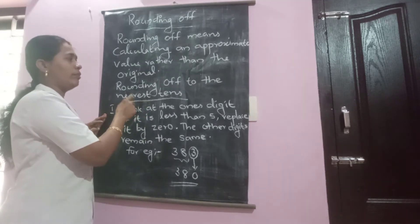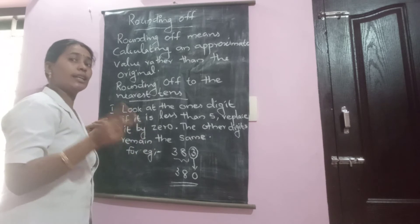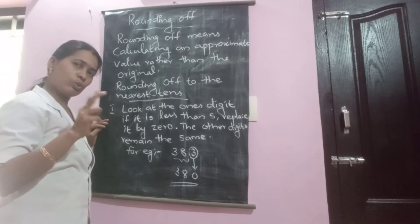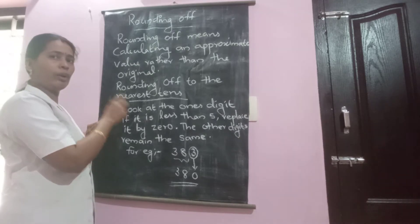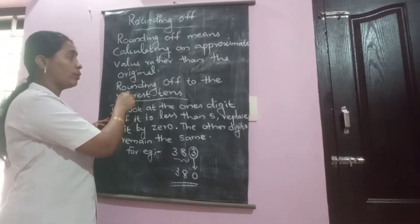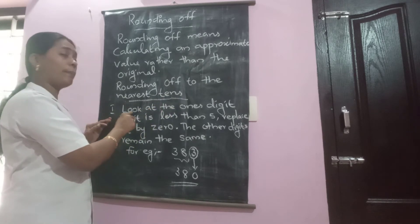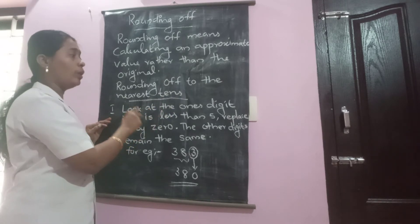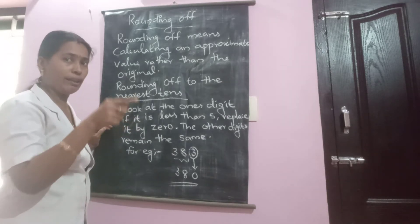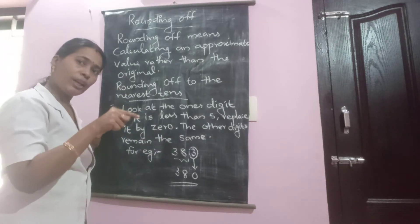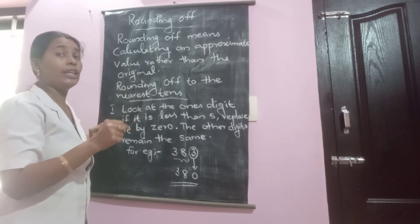When we are rounding off a given number to nearest tens, there are two rules. Rule 1 says: look at the one's digit. Round off that one's digit, and after rounding off the one's digit, replace the one's digit by zero.